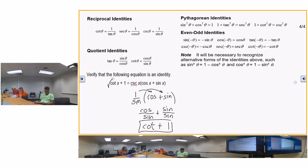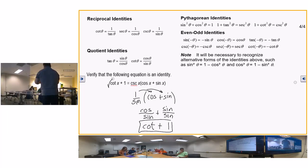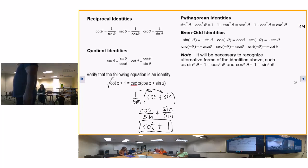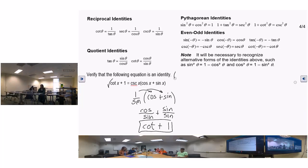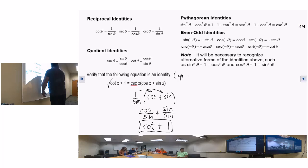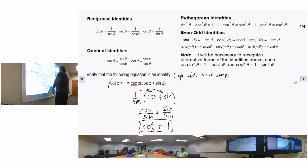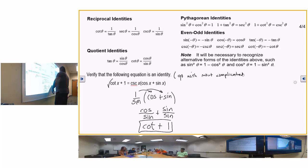So the cosecant, I'm going to rewrite it as one over the sine. Cosine and cosine is already, I'm not going to mess with those, because they're already in terms of sine and cosine. So let's go ahead and look and distribute, and that's going to give us cosine over sine plus sine over sine.